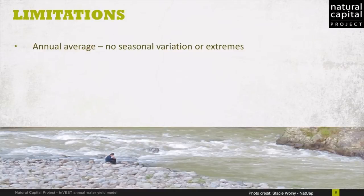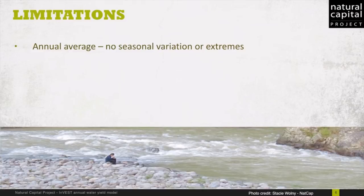The primary limitation of this model is that it works on an annual average basis, so there is no information given on seasonal variation in runoff. This needs to be considered when interpreting an increase or decrease in annual water yield. Depending on the climate, this change may occur homogeneously throughout the year or only during the dry season, and not knowing this timing may be important to the decision context.